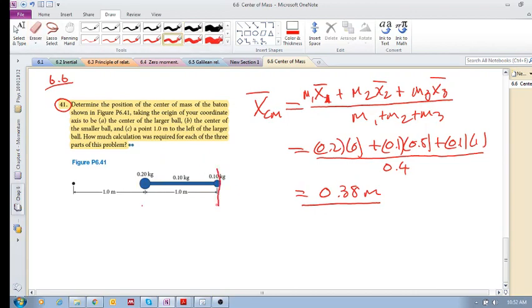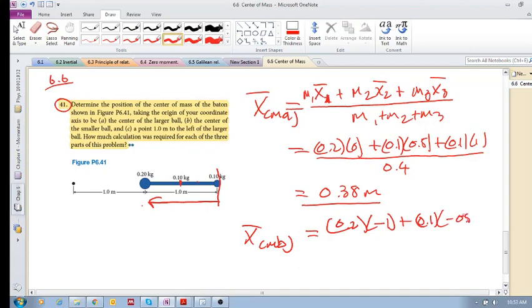Okay, now, this is important, if you now take your reference frame there. So, let's call this A, X center of mass B. Now, what's going to happen? You're going to have this one, 0.2, but now take note, it is now to the left, so it has to be minus 1, plus 0.1. This is 0.1 kilograms times minus 0.5, plus 0.1 times 0, because this position is 0, divided by 0.4.